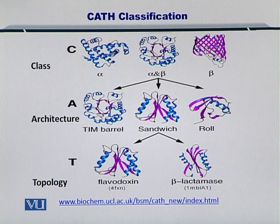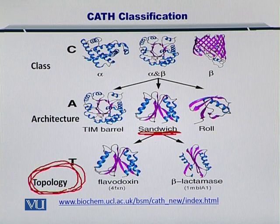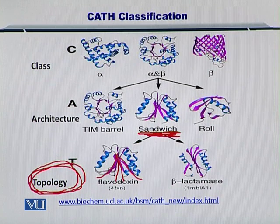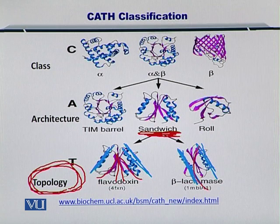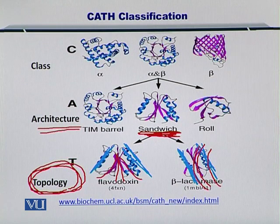Moreover, let's consider the example of the sandwich. There can be multiple topologies for each sandwich. In the first example, you have the beta sheets and the alpha helices at the outskirts of the domain. In the second example, the alpha helices are in a different conformation while the beta sheets are arranged differently. This is how topology can differ even though the architecture remains the same — in this case, the sandwich architecture.